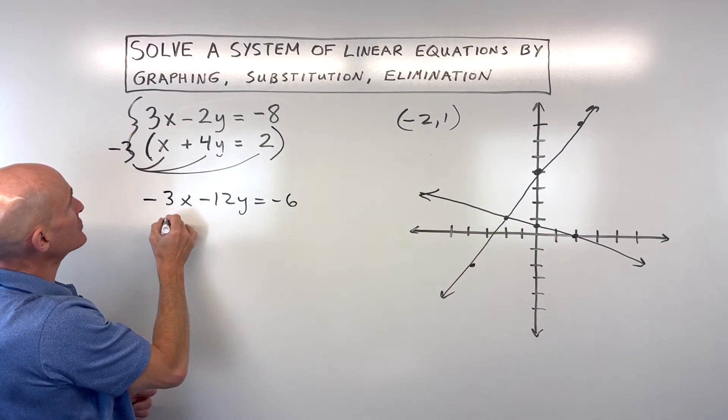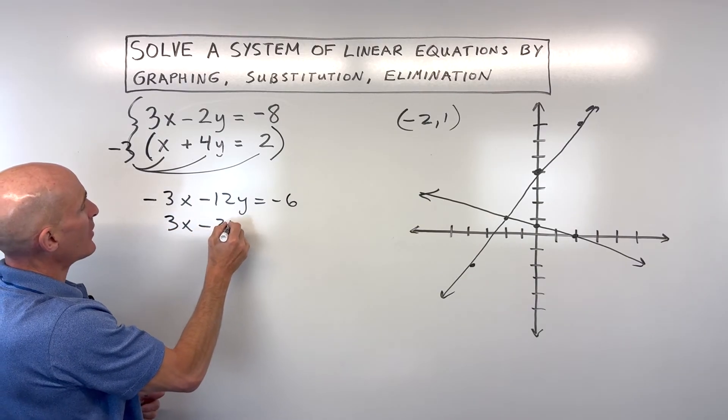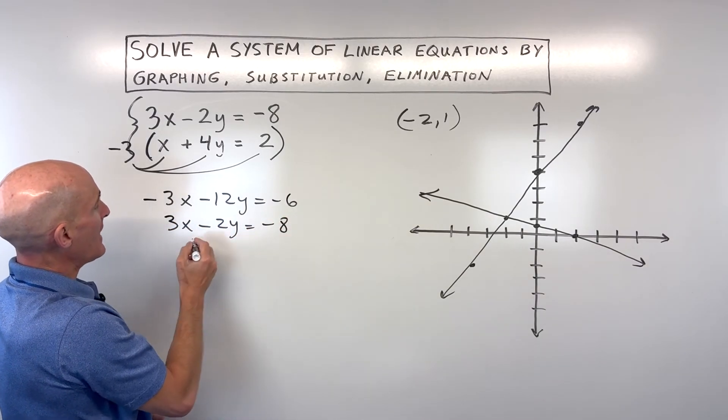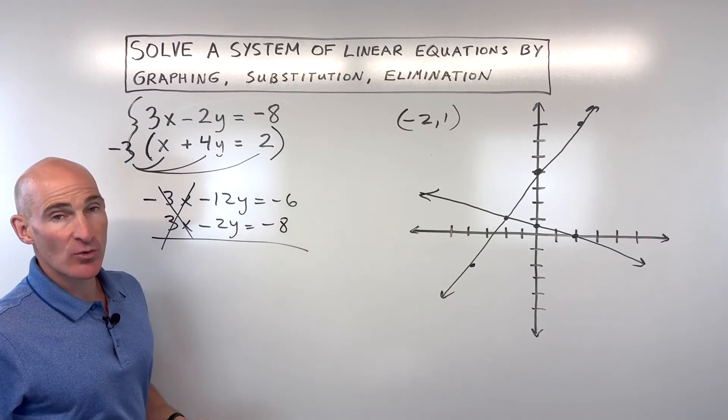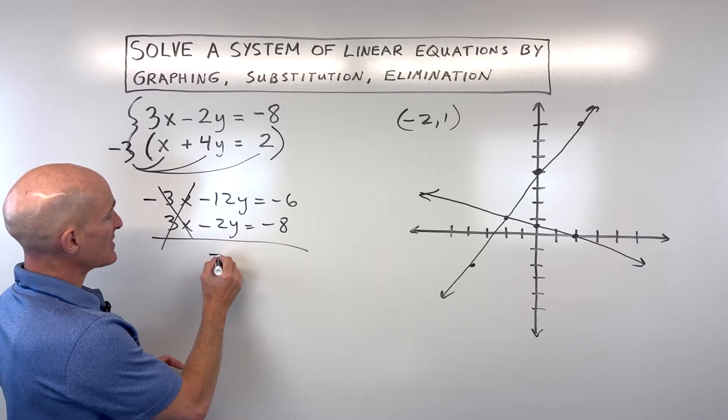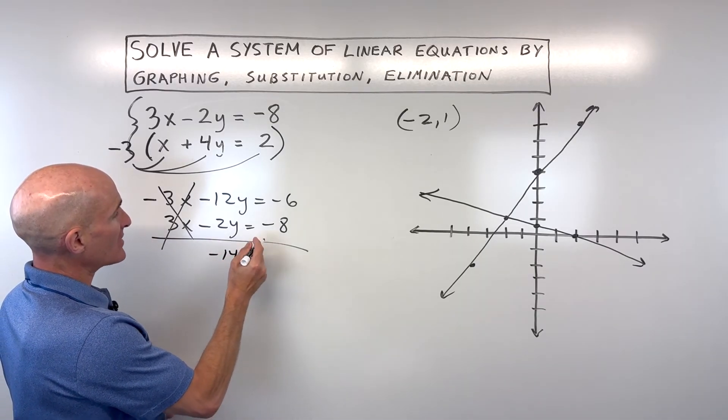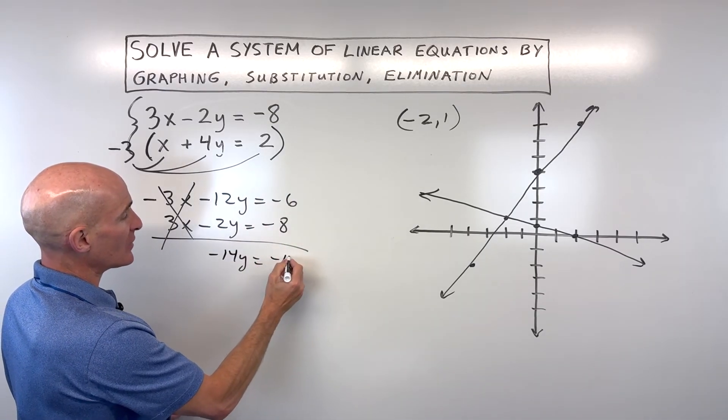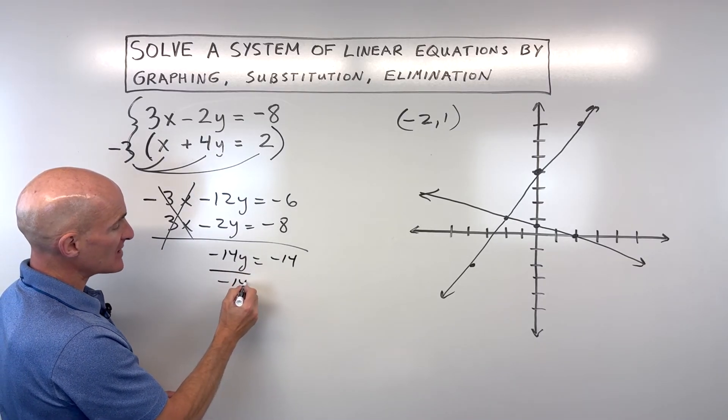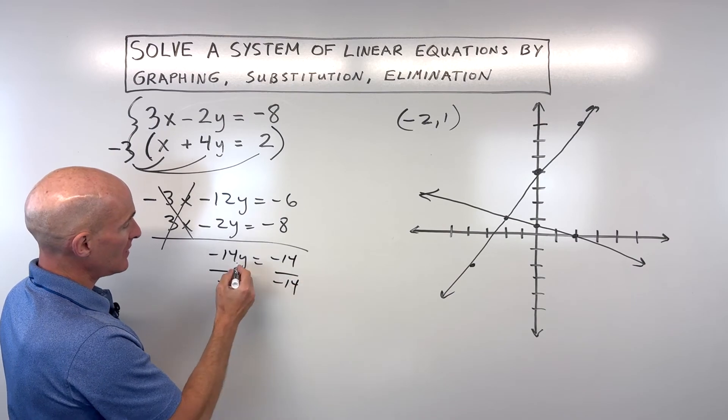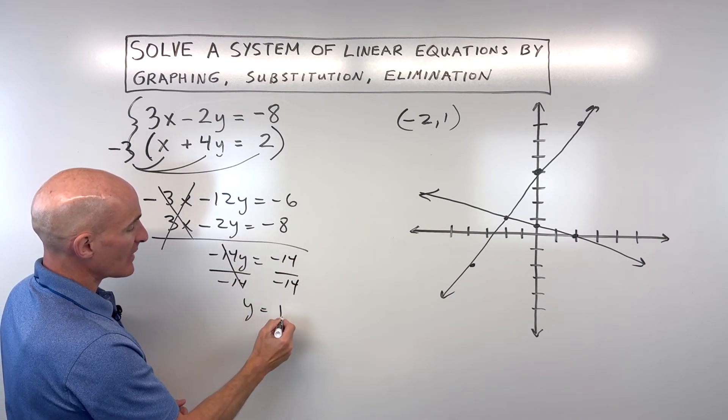I'm going to rewrite that first equation right below it. And now, you can see when I add straight down, see these x's are canceling one another out. So, that just comes out to 0. This comes out to negative 14y when we add straight down. And this is equal to negative 14. We want to just solve for 1y. So, I'll divide both sides by negative 14. And you can see that y is coming out to 1.